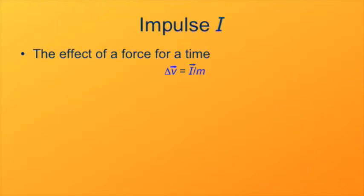Earlier we derived that the change in velocity of an object is the force times time divided by mass. Now replacing force times time with impulse, we see that an object's change in velocity is the impulse divided by its mass.